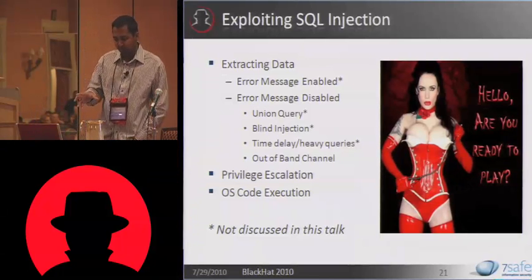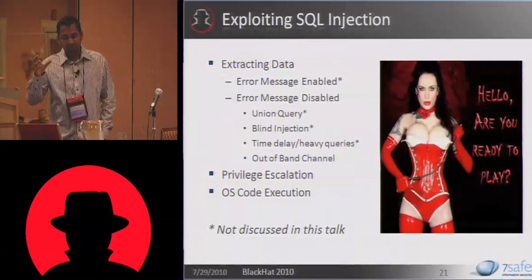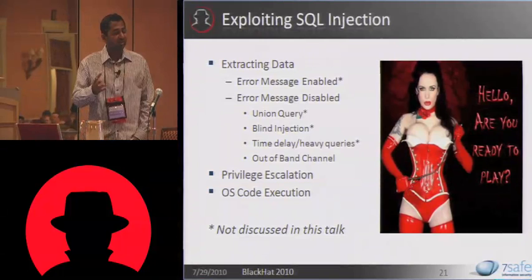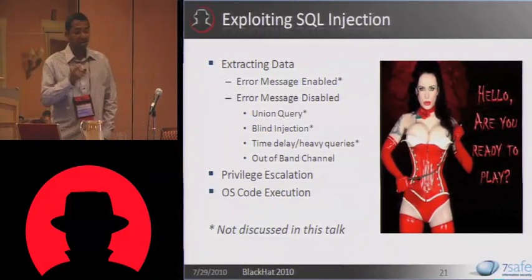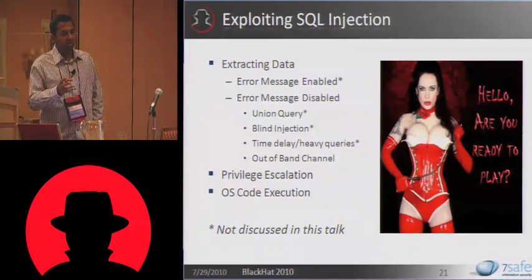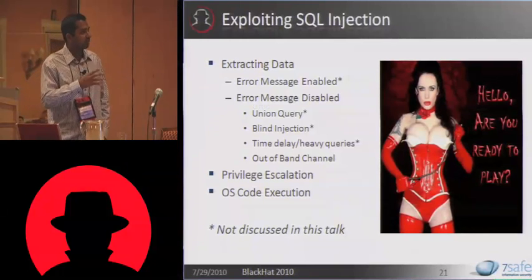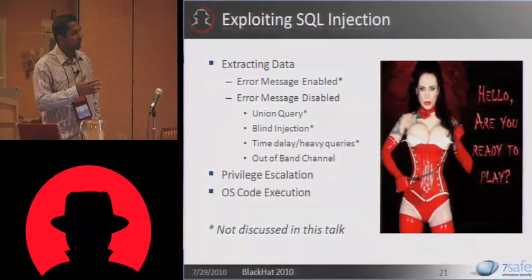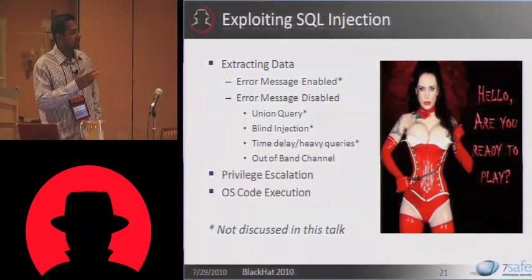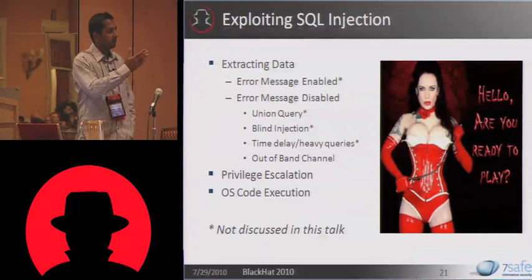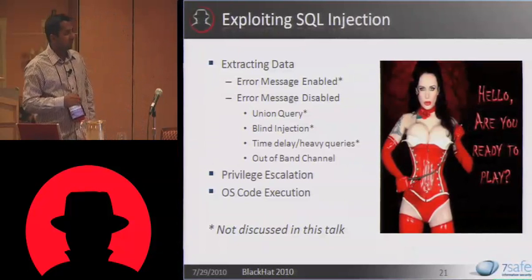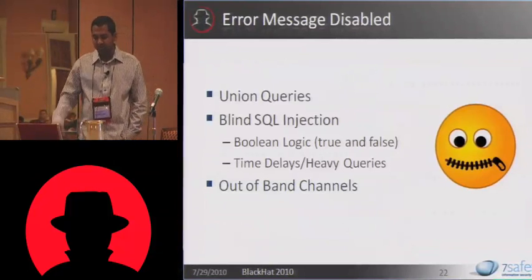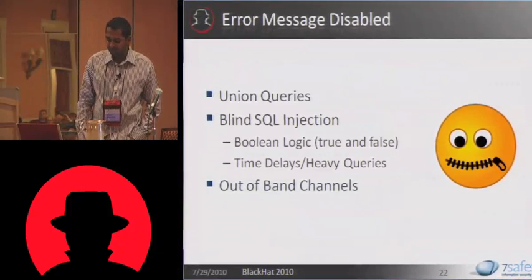I can briefly touch on out-of-band channels. When you want to extract data from SQL injections, there are two categories: either the database error message is enabled and you can see it, or it's disabled. If it's enabled, you can use that error message to extract data just as you would in MSSQL by doing typecast error messages — there are similar tricks in Oracle. If the error message is disabled, the tricks aren't much different from what you'd use against MSSQL or MySQL: union queries, blind injection, time delays — for example, WAIT FOR DELAY in MSSQL, or similar heavy queries discussed at last year's DEF CON.